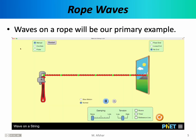There are many different types of waves. However, for us in this class, our primary example or prototype of waves will be rope waves. Rope waves are relatively easy to understand and easy to imagine — in fact, most people can experiment with rope waves at home. So for this lecture and the next couple of lectures, we're going to concentrate on rope waves. Once we have thoroughly understood the basic properties of rope waves, we'll move on to more advanced waves.